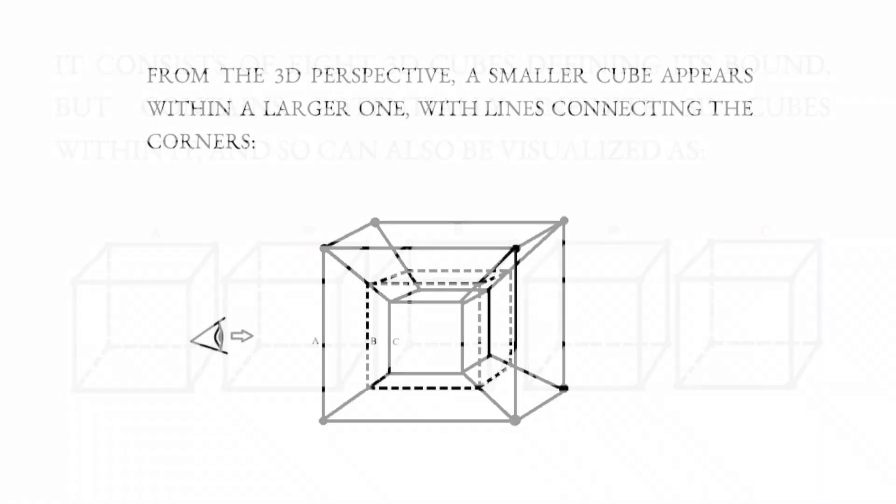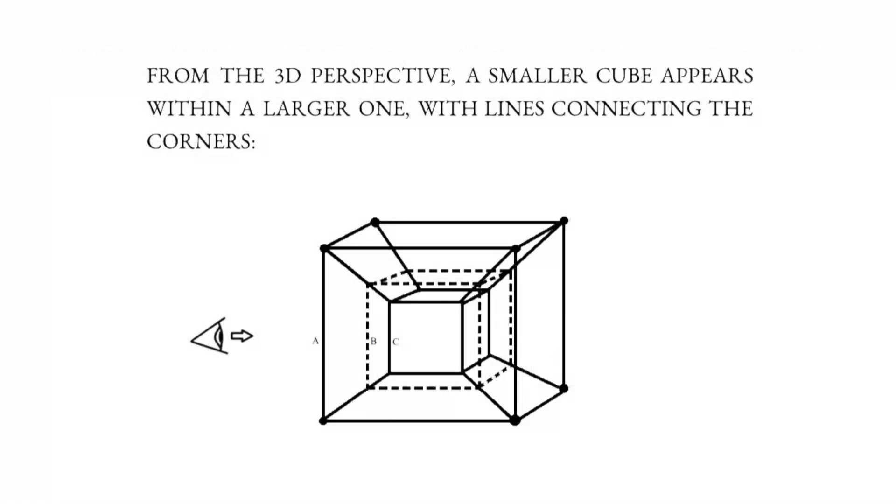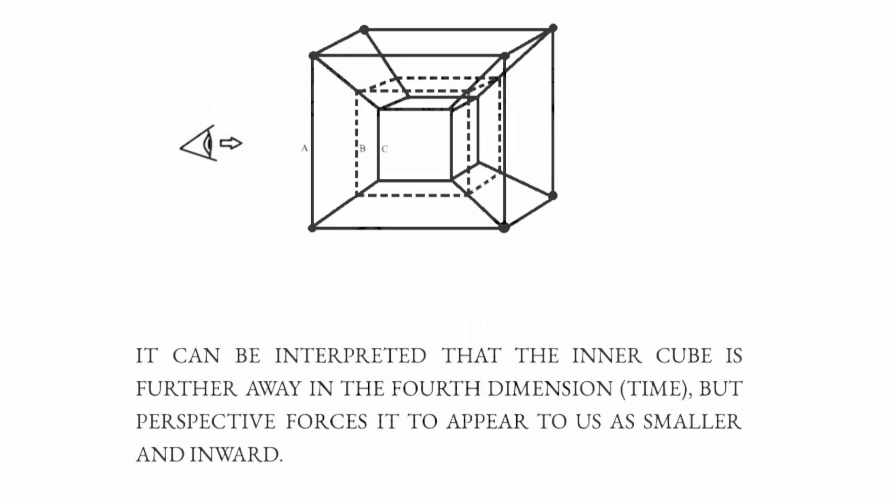From the three dimensional perspective, a smaller cube appears within the larger one, with lines connecting the corners. It can be interpreted that the inner cube is further away in the fourth dimension — time — but perspective forces it to appear to us as smaller and inward.